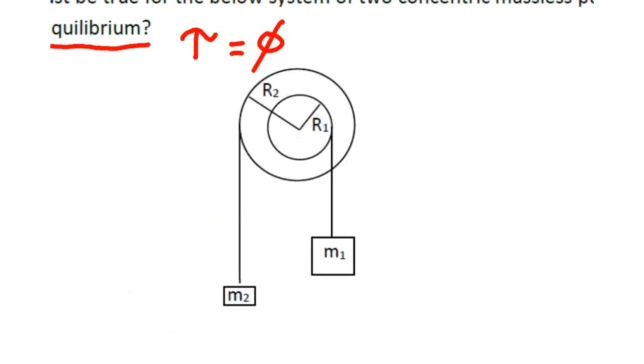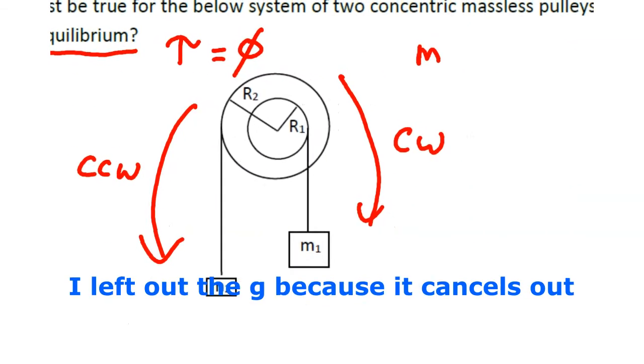Number seven. This system's in equilibrium, so that means the sum of the torques equals zero. There's a clockwise torque and a counterclockwise torque. These torques must be equal because the sum of the torques equals zero. So m₁ times the moment arm r₁ equals m₂ times r...